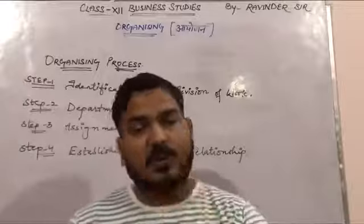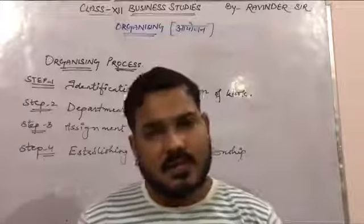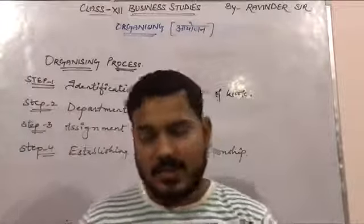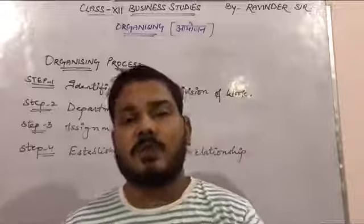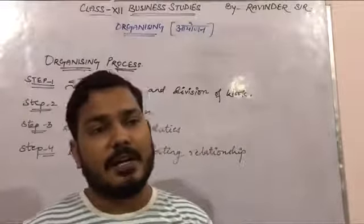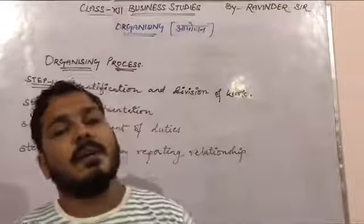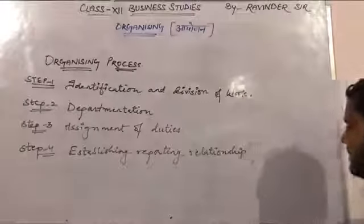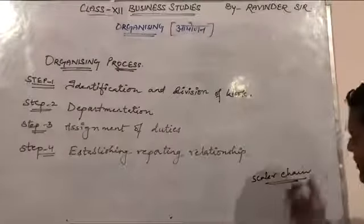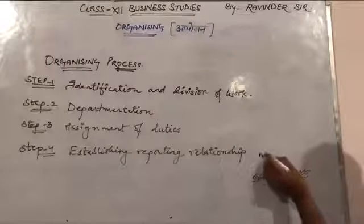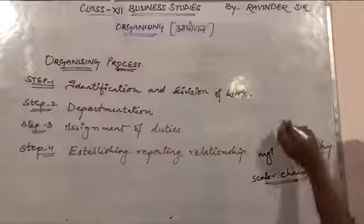Establishing reporting relationships means telling the employee from whom they have to take orders, to whom they are accountable and answerable, and to whom they can pass orders. This creates a hierarchical structure of management. This is what we also call a scalar chain — the management hierarchy.